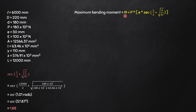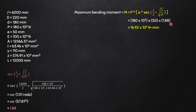Now inputting the values: P = 180×10³ N, e = 50 mm, and the sec term = 1.88. Therefore M = 180×10³ × 50 × 1.88 = 16.92×10⁶ N·mm. Be careful about the units.